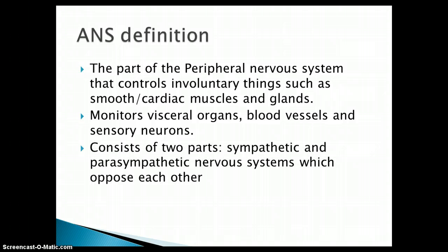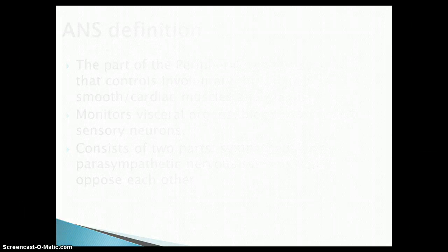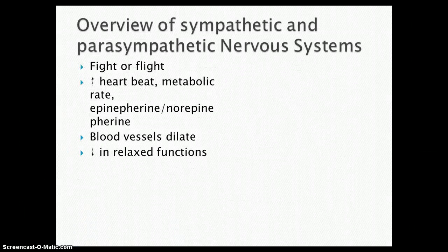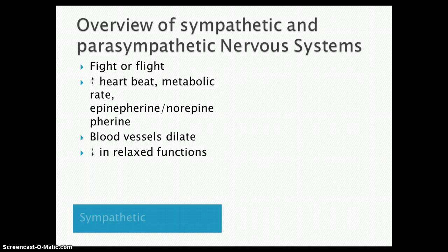So it also consists of two different parts — the sympathetic and the parasympathetic nervous systems — and we'll see later on that these systems actually oppose each other. So let's talk a little bit about each.